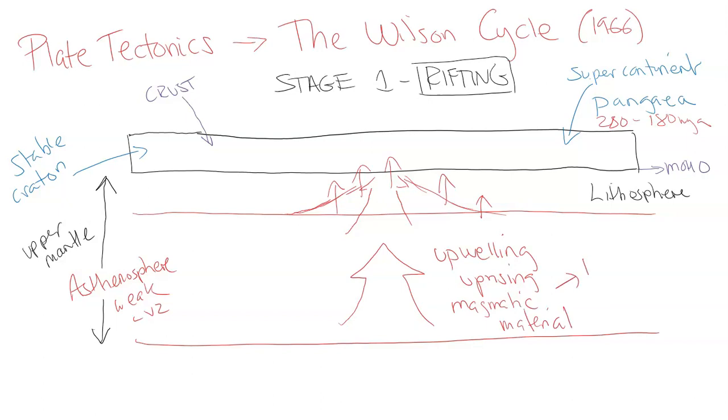Or the uprising of magmatic material. This will mostly be basaltic, very mafic, and it's going to be not very viscous or low viscosity. So it's going to cause this and it's going to put a lot of pressure on this part, this part of that supercontinent, that connected crust, that stable craton.